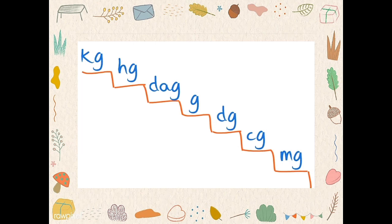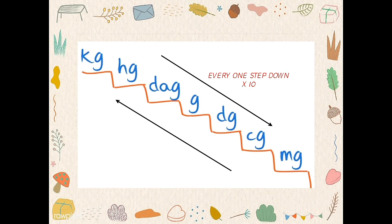This is the stair of mass: kilogram, hectogram, dekagram, gram, desigram, centigram, and the last milligram. This is downstairs — every one step down, times by 10. And this is upstairs — every one step up, divided by 10. Please remember, friends.